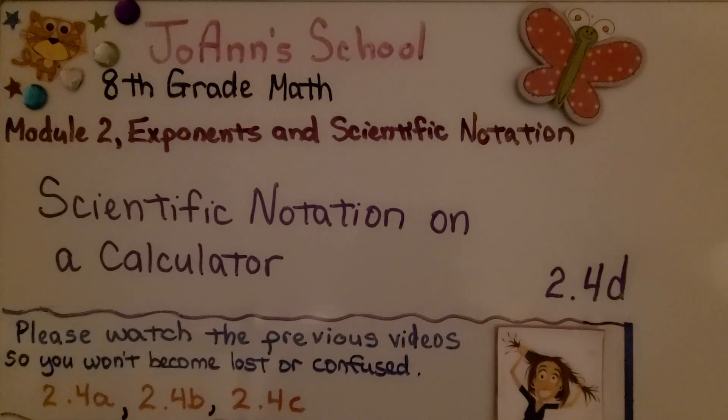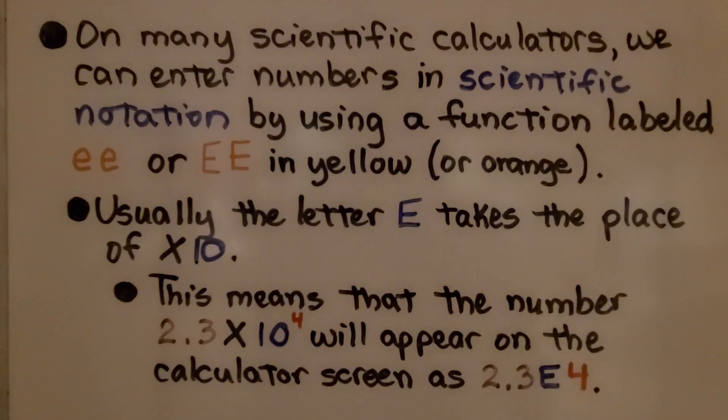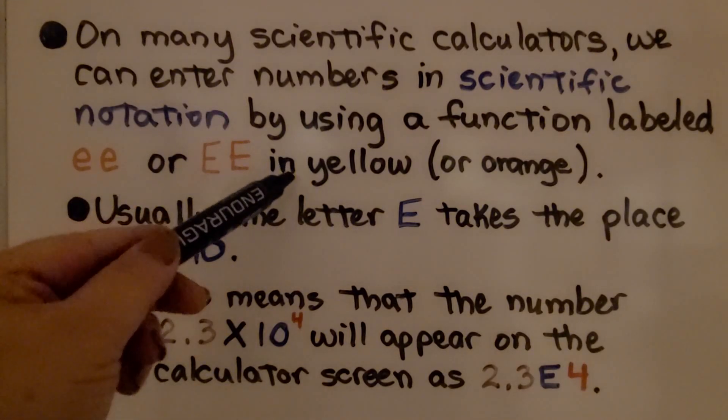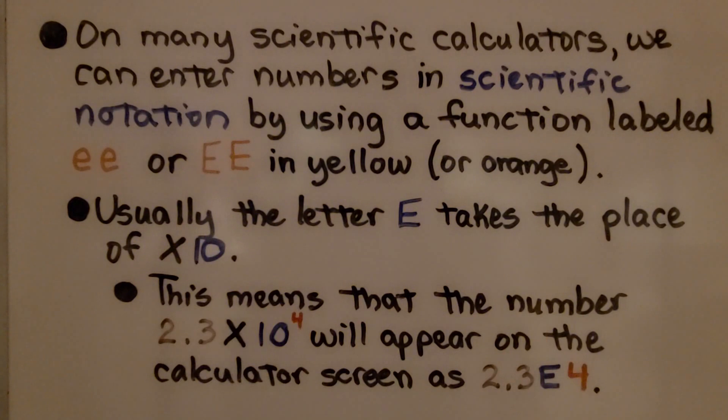Scientific Notation on a Calculator, Lesson 2.4d. On many scientific calculators, we can enter numbers in scientific notation by using a function labeled EE in lowercase or uppercase, and they're usually in yellow, could be in orange, depending on the model.